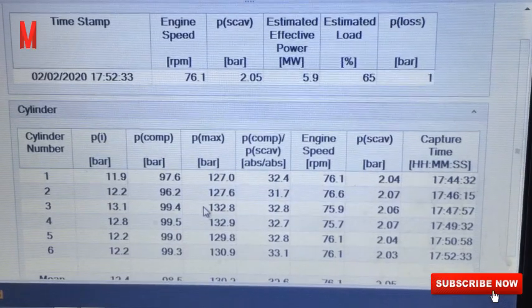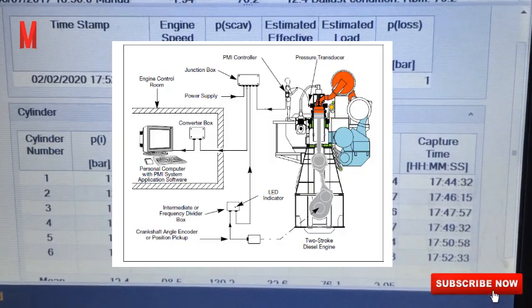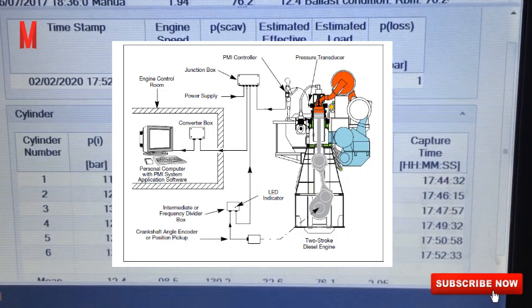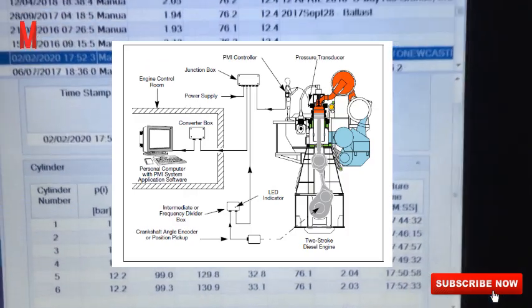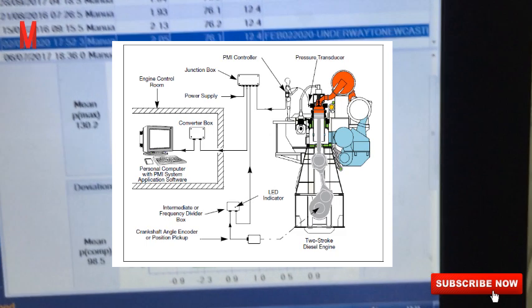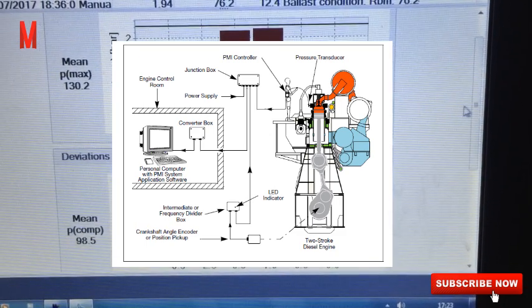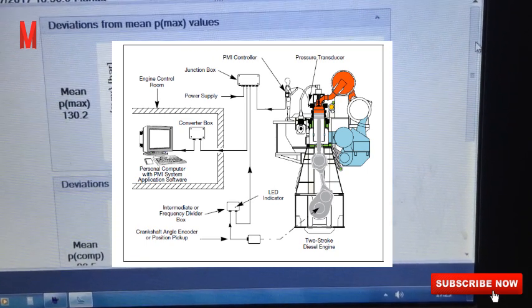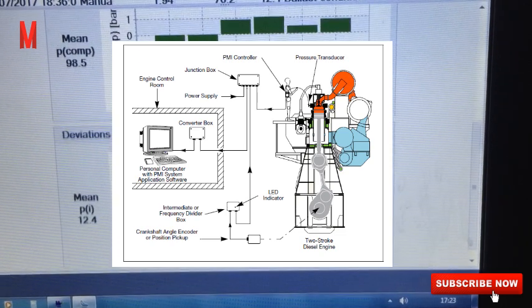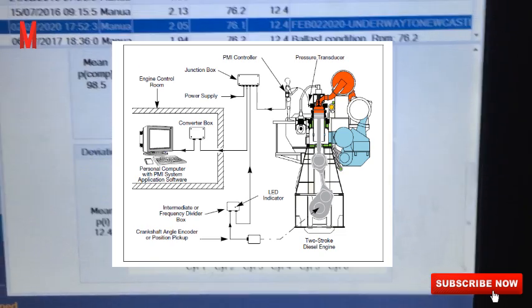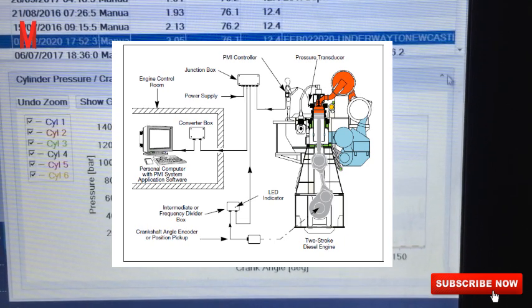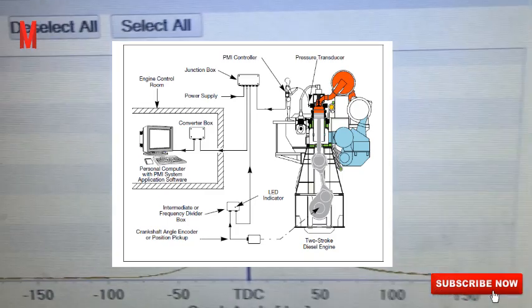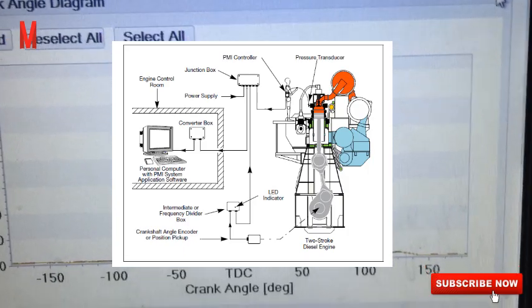The schematic diagram shows that from the main engine we have the pressure transducer and the PMI controller, the junction box, and the computer PMI system. The offline version of the system employs a high-performance piezoelectric transducer. This is a well-proven design which is mounted on the cylinder head indicator cock, from which the cylinder pressure is measured.